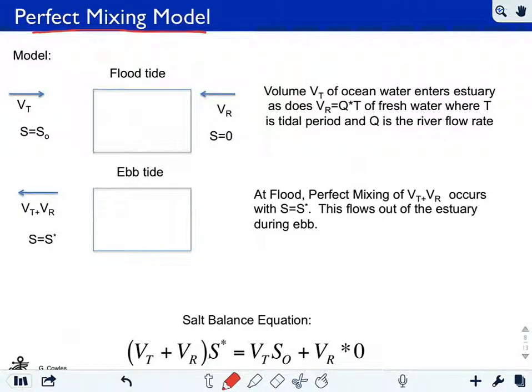First is this idea of what's called the tidal prism method, which comes from a simple model of an estuary known as the perfect mixing model. In the perfect mixing model, we imagine the following to happen. This box is our estuary. During flood, you have an amount of water entering the estuary equal to the amount that comes in during that flood tide, VT. The salinity of that water coming in, the VT volume of water, is equal to the open ocean salinity, S0.